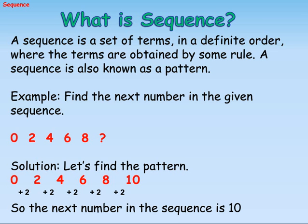Example. Find the next number in the given sequence: 0, 2, 4, 6, 8. Solution: Let's find the pattern. 0, 2, 4, 6, 8, 10 — this shows that in the given sequence, the next number is obtained by adding 2 to the previous number. So the next number in the sequence is 10.